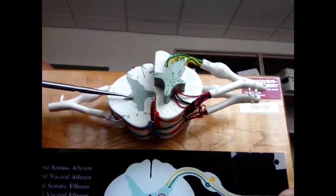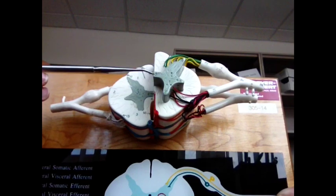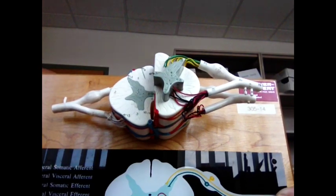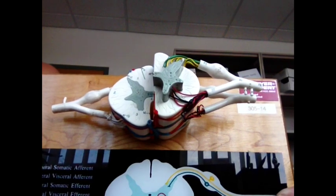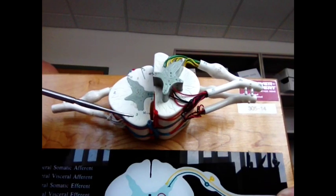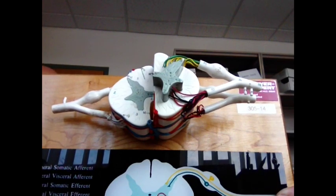Right down the middle of the spinal cord, there is the central canal. It's a small hole that passes through the middle, and cerebrospinal fluid circulates through that hole. The gray matter surrounding the central canal here and then down here is called the gray commissure.